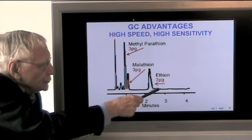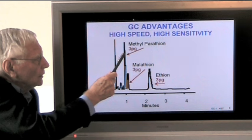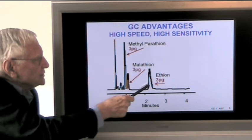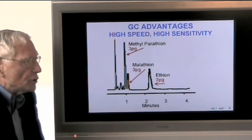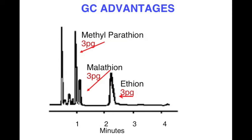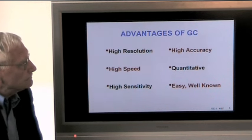With high sensitivity, we see both rapid analysis as well as high sensitivity. Here, for example, is a two and a half minute separation of three common pesticides, methylparathion, malathion, and ethion at the picogram levels. Picogram, 10 to the minus 12 grams, means these are parts per billion. So this is a very good example of both the high speed as well as a very sensitive detection.